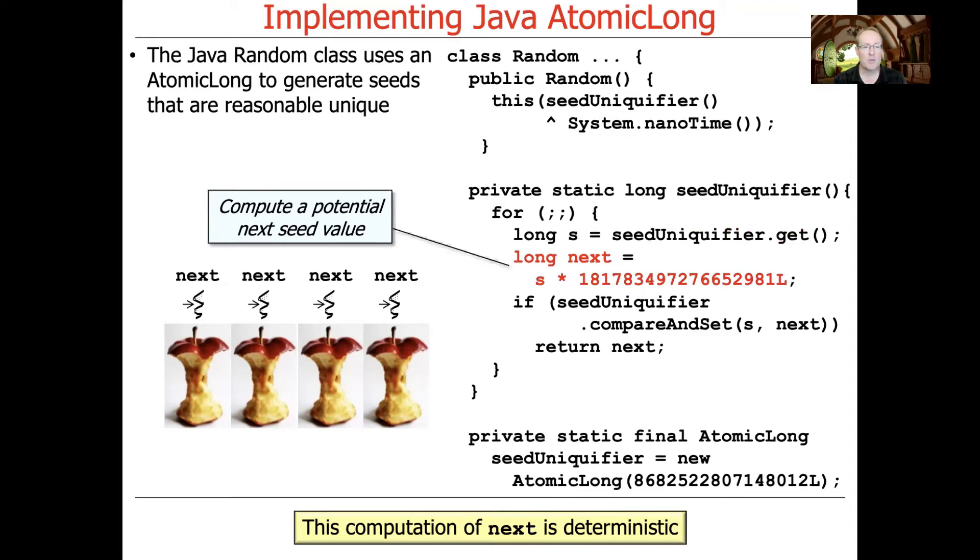And then what we do is we compute a potential next seed value. So we take the current seed value and we go ahead and we multiply it by some other big number. Notice that this call is deterministic. Whatever we had before, we're going to get the same results each time we call it.